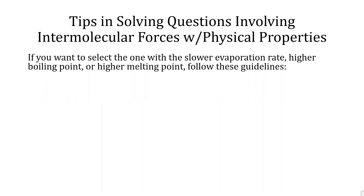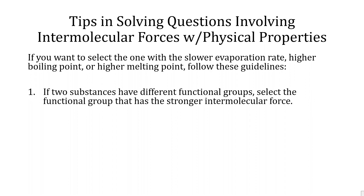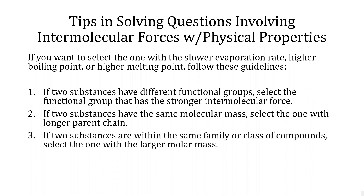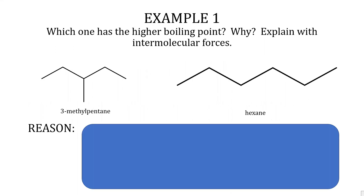If you want to select the substance with a slower evaporation rate, higher boiling point, or higher melting point, follow these guidelines: one, if two substances have different functional groups, select the function that has the stronger intermolecular force; two, if two substances have the same molecular formula, select the one with the longer chain or greater molar mass.